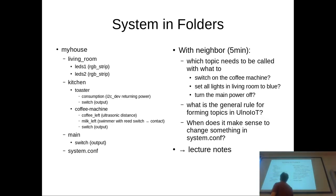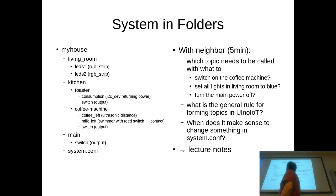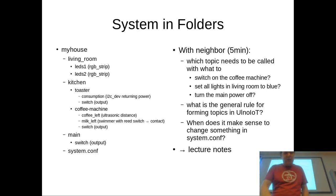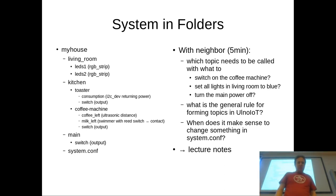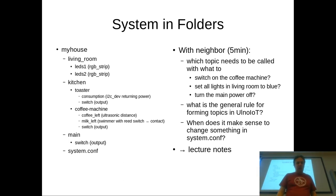I've given you a small example folder layout of a youllo IoT system folder. The system folder is called 'my house' and there are two subfolders: living room and kitchen. In those subfolders there are node folders — LED one, LED two, toaster, and coffee machine. There's also a device folder at the top level called 'main' which has a main switch for switching off power to the whole house, and there's a system config in there as usual.